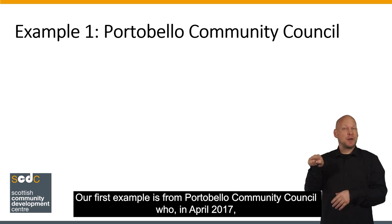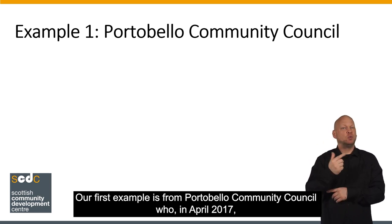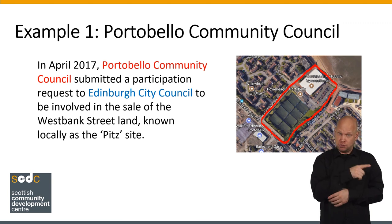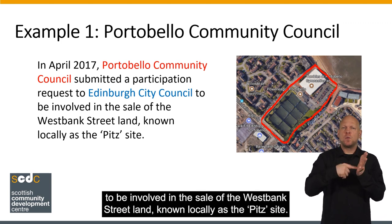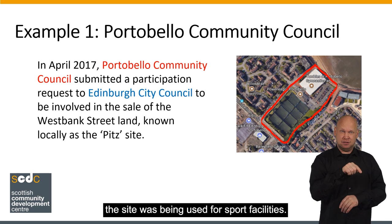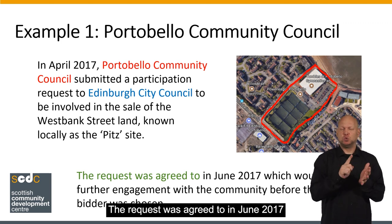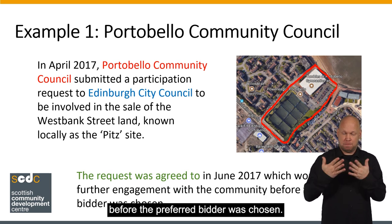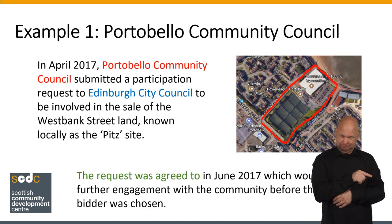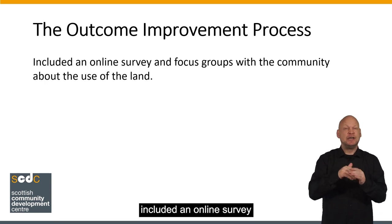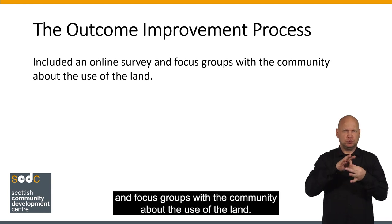Our first example is from Portobello Community Council, who in April 2017 submitted a participation request to Edinburgh City Council to be involved in the sale of the West Bank Street land, known locally as the pits site. At the time the site was being used for sport facilities. The request was agreed to in June 2017, which would allow further engagement with the community before the preferred bidder was chosen. The resulting outcome improvement process included an online survey and focus groups with the community about the use of the land.